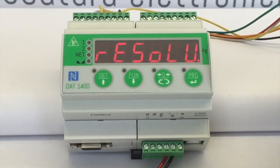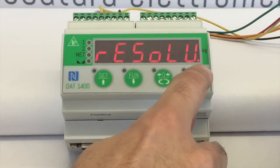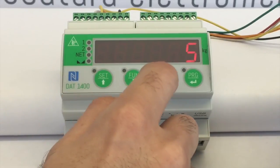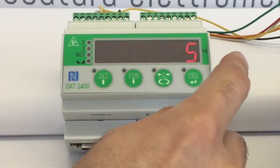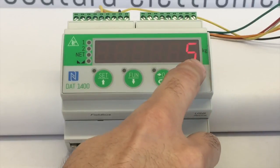In the RESOLUTION submenu you can set the minimum division of the instrument using SET and FAN buttons. Let's set 5 kg. Press and hold PRG for 2 seconds to confirm.